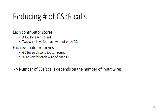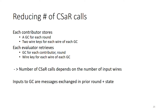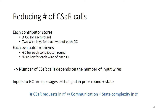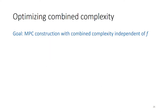Similarly, the release requests each evaluator will perform consist of retrieving all garbled circuits as well as a single wire key for each wire of each garbled circuit. So, as you can see, the number of input wires in our construction is the dominant factor in the number of CSAR requests. At the same time, the inputs to each garbled circuit are messages exchanged by the parties in the previous round, plus the state passed from the garbled circuit of the same party from the previous round. This means that the number of CSAR requests is approximately the same as the combined communication and state complexity of the underlying protocol Pi. To reduce this combined communication and state complexity, we propose a protocol which is secure against fully malicious adversaries and whose combined complexity is independent of the function being computed.